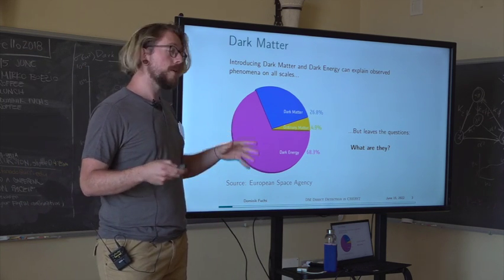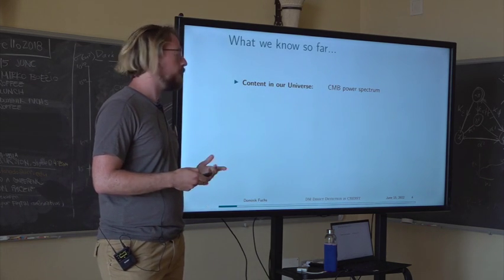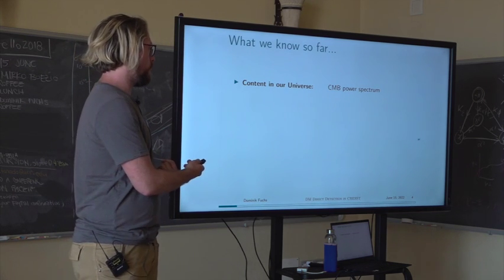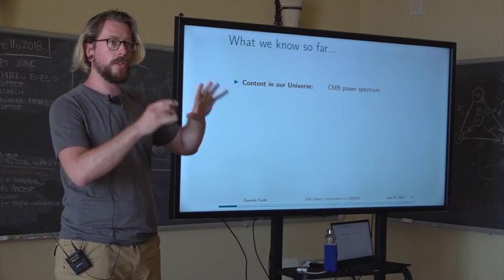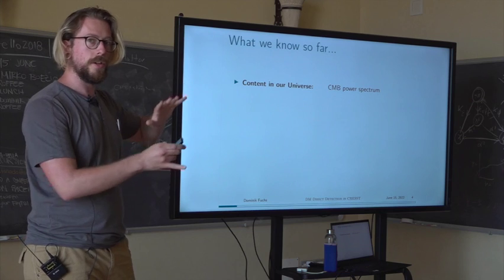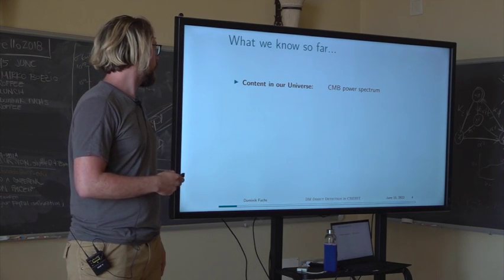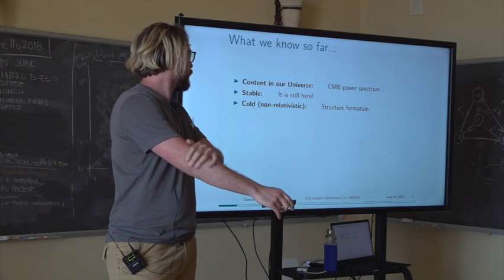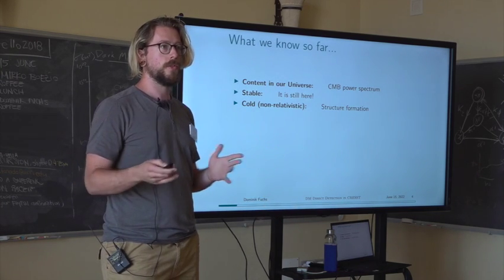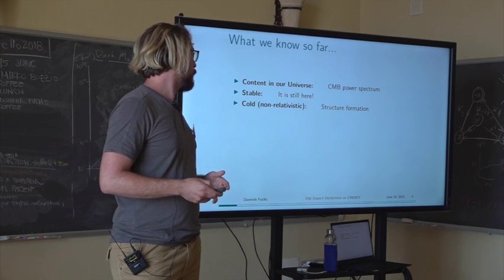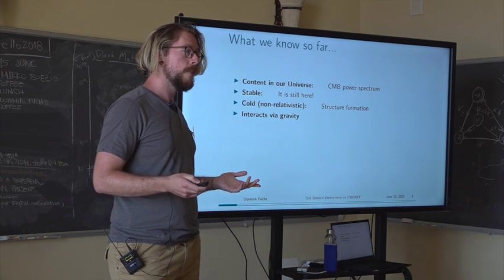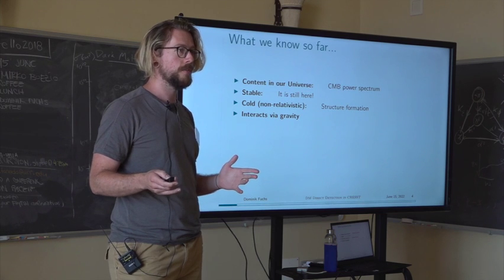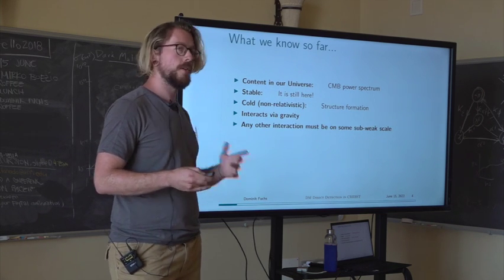We know quite little but not nothing about dark matter, so we can list a few properties. We know the amount in the universe, mainly from the CMB power spectrum. From here on I'll assume we're talking about a particle solution. We know it's stable on cosmological time scales because it's still here. From structure formation we know it should be non-relativistic. It definitely interacts via gravity and, if it interacts with standard model particles at all, it must be via some force at the weak or sub-weak scale.